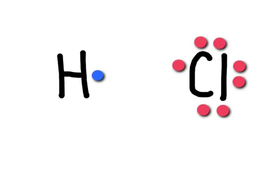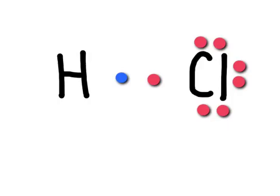What they do instead is share their valence electrons. If they bring both of their electrons into the center and share them, hydrogen will see both electrons as its own, giving it two electrons. Chlorine will also see both electrons as its own, giving it a total of eight electrons and satisfying the octet rule. We write this covalent compound by putting both element symbols separated by a line, where that dash represents the covalent bond — two electrons within that bond.